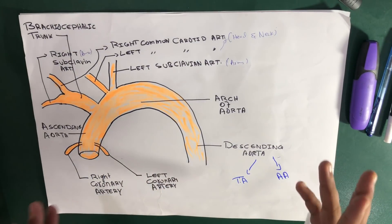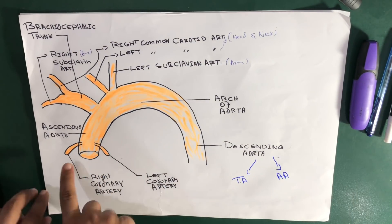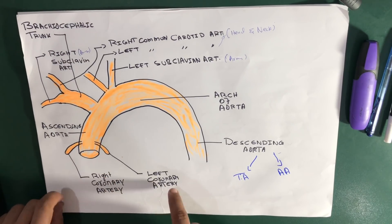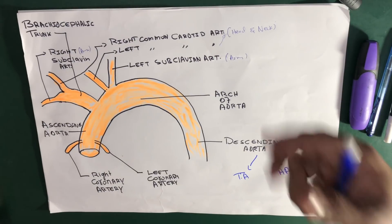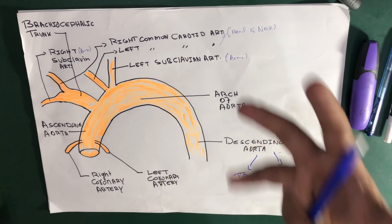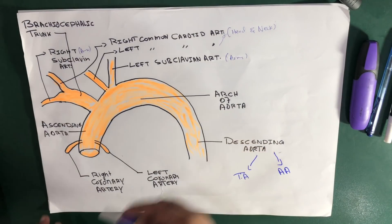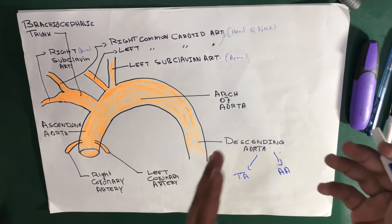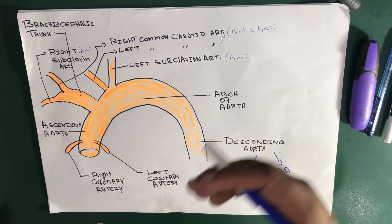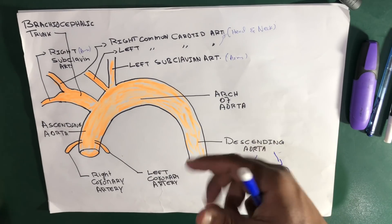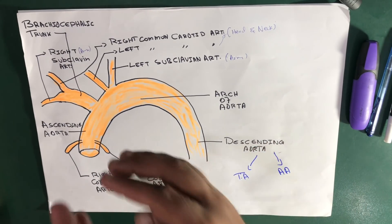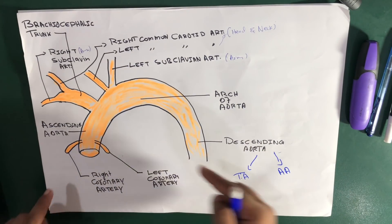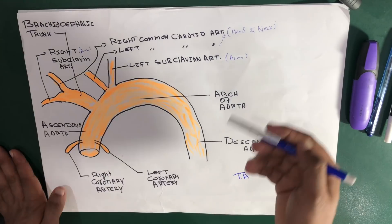The ascending aorta has only two branches: the right coronary artery and the left coronary artery. These supply blood to the heart muscle. The ascending aorta begins at the level of the lower border of the third costal cartilage, behind the left half of the sternum.